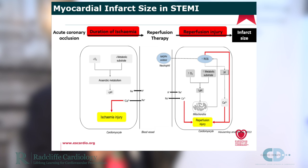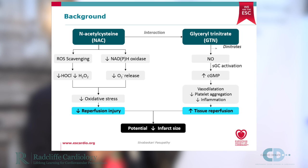The rationale behind this is that ST elevation myocardial infarction is associated with an acute coronary occlusion for which we undertake reperfusion therapy. The promptness of reperfusion will reduce infarct size, but the determinants of infarct size are both the duration of ischemia as well as reperfusion injury. The duration of ischemia results in ischemic injury due to free radical generation, as does the reperfusion injury. N-acetylcysteine is a free radical scavenger and therefore reduces oxidative stress and reperfusion injury.